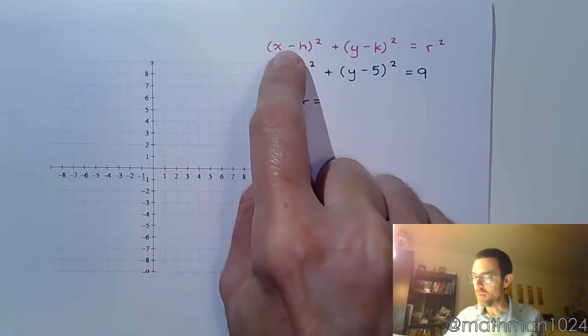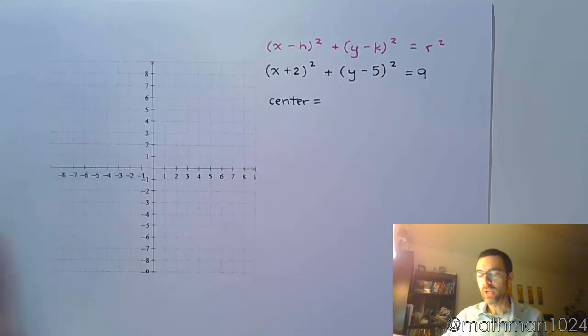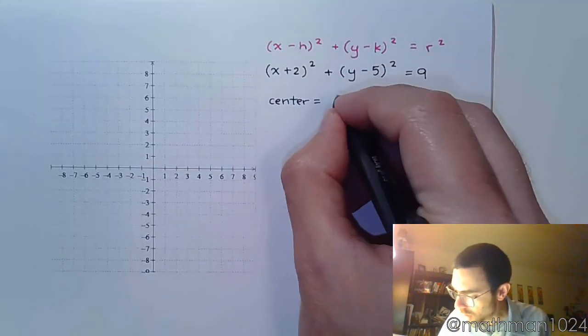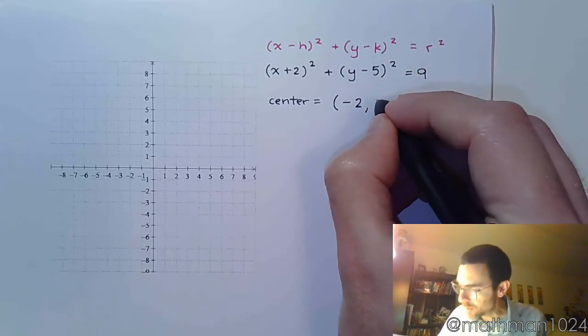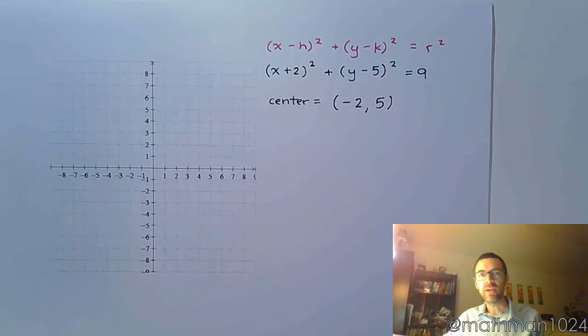And we noticed how we have minuses, we have subtraction, in this original form. So when it comes to identifying the h and the k, you write the opposite of what you see. So even though you see a plus 2, you actually write the opposite, which is negative 2. I see negative 5, and the opposite of that is positive 5. That's how we identify the center.